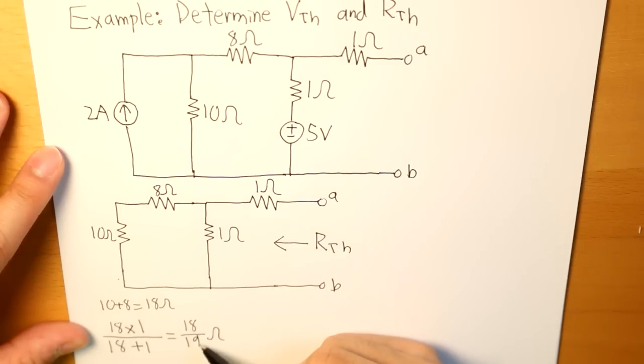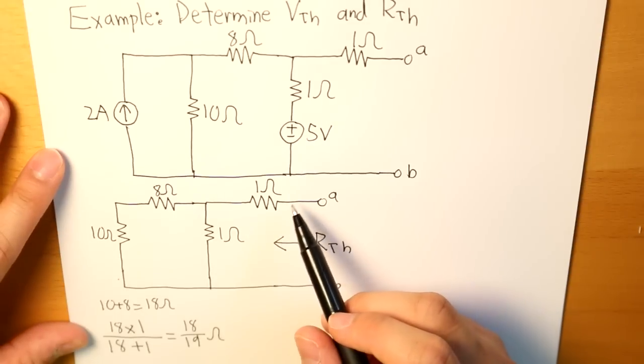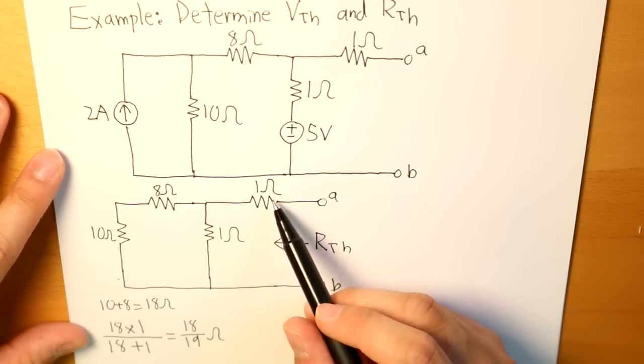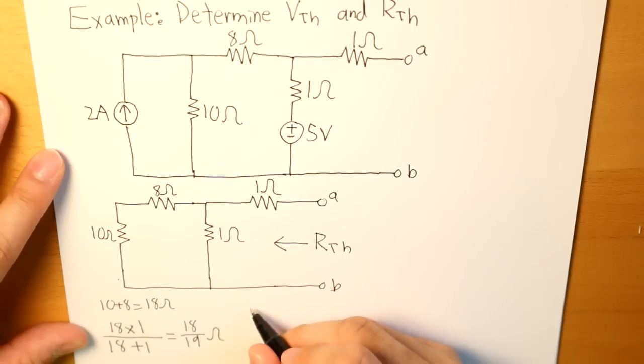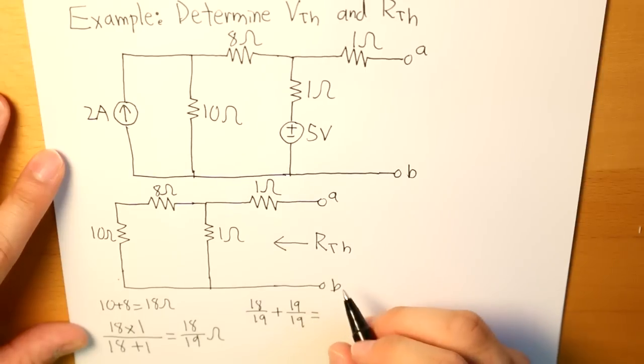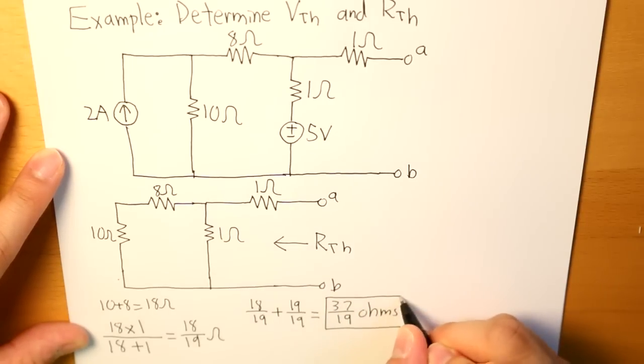And then this 18 over 19 ohms is going to be in series with this 1 ohm. So that's going to be 18 over 19, and 1 ohm is going to be equivalent to 19 over 19. And what we get is 37 over 19 ohms. And this is what our value for our Rth is going to be.